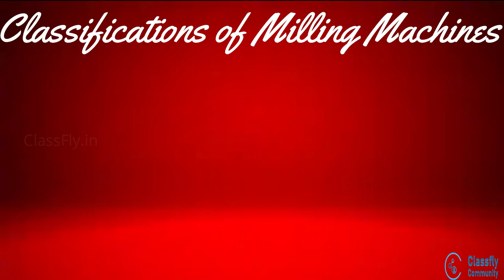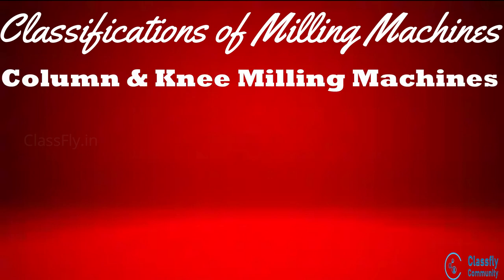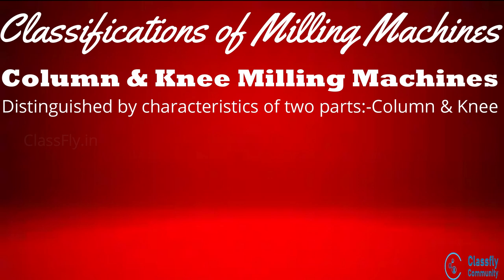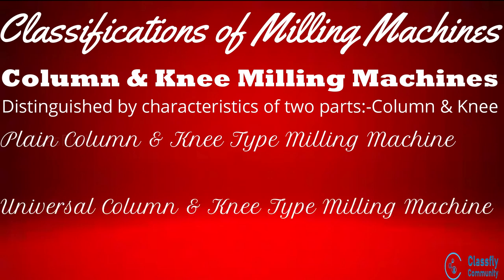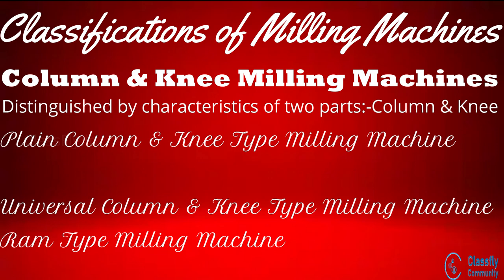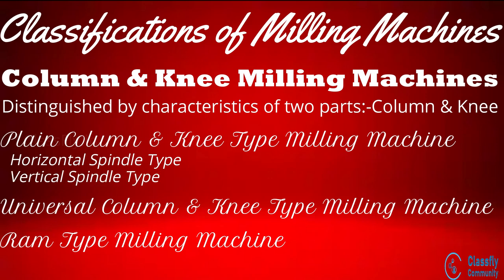We now study the different classifications of the milling machines. Milling machines are mainly classified into four types. Column and knee milling machines are so named because they are distinguishingly characterized by two principal parts: column and knee. They are the most commonly used machines for general purpose milling. They are further classified into plain column and knee type, universal column and knee type, and ram type milling machine. The plain column and knee type is further classified into horizontal spindle type and vertical spindle type.